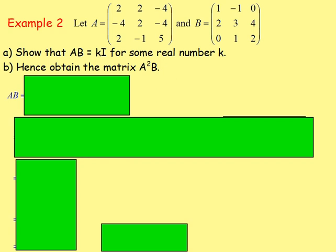Example 2: Let A be this 3×3 matrix [2, 2, -4; -4, 2, -4; 2, -1, 5] and matrix B be the 3×3 matrix [1, -1, 0; 2, 3, 4; 0, 1, 2]. Part A: show that AB equals KI for some real number K. Part B: hence obtain the matrix A²B. First, we want to work out AB — matrix A is 3×3 and matrix B is also 3×3, so we can multiply them.